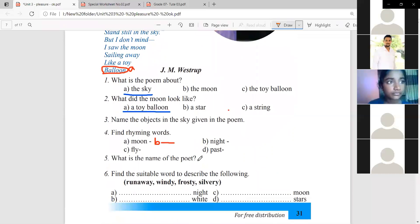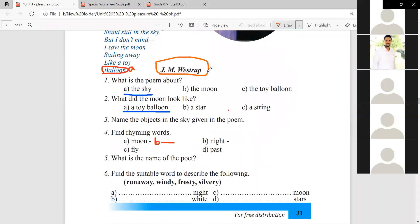What is the name of the poet? You know him by the name. J.M. Westrup is the name of the poet.